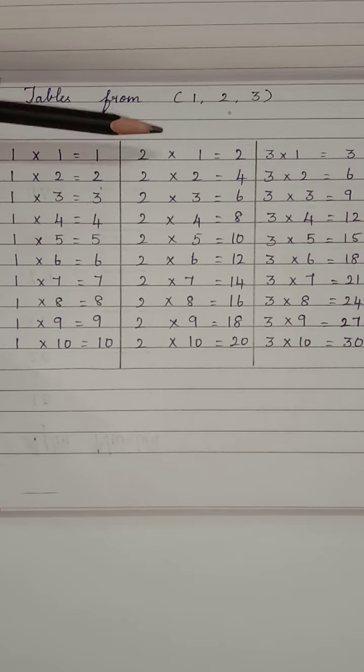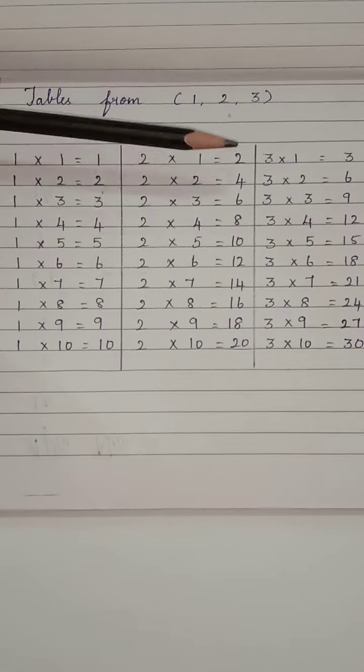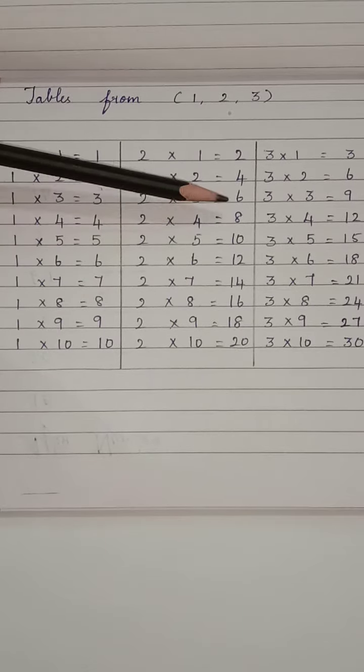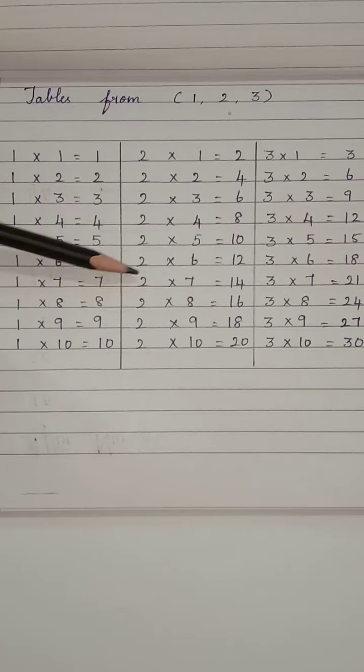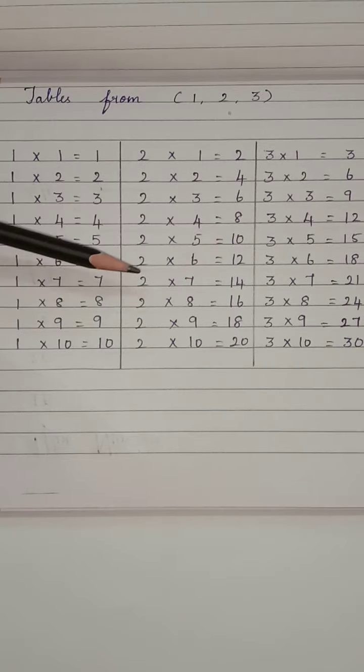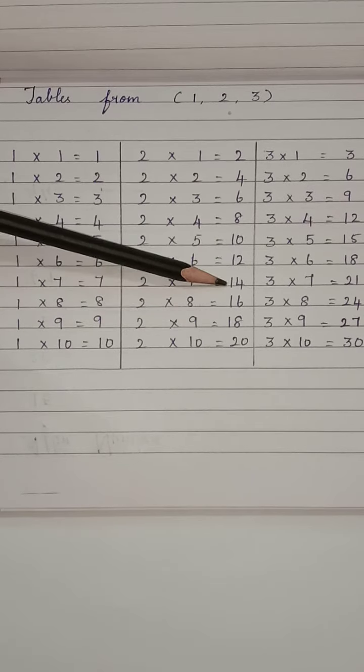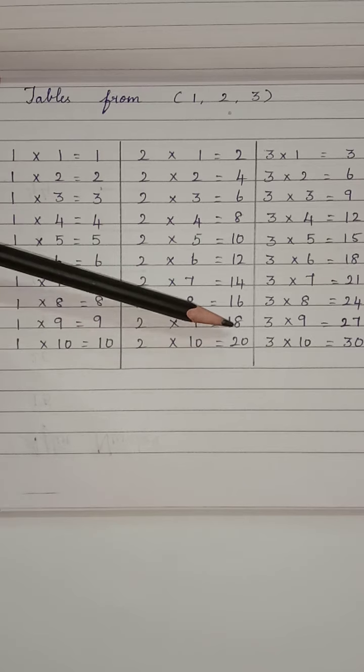Next come to 2 table. 2 1s are 2, 2 2s are 4, 2 3s are 6, 2 4s are 8, 2 5s are 10, 2 6s are 12, 2 7s are 14, 2 8s are 16, 2 9s are 18, 2 10s are 20.